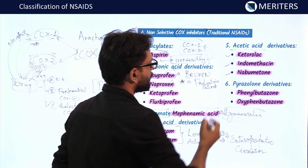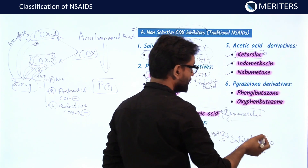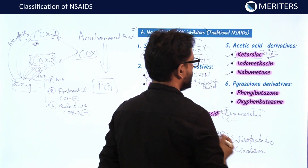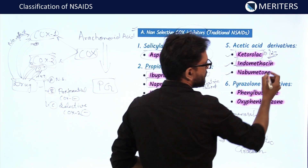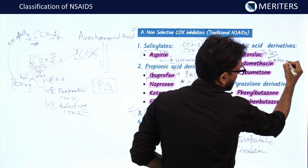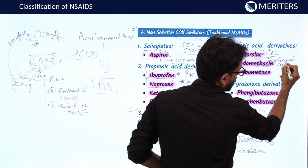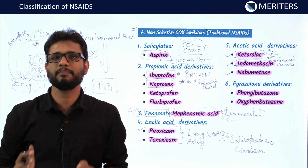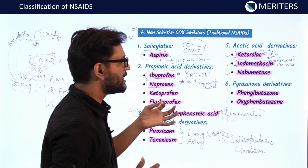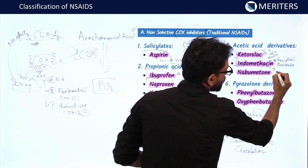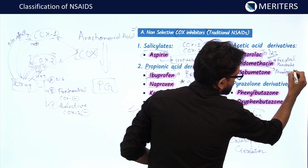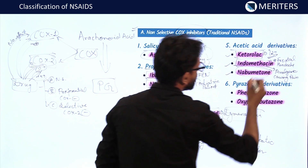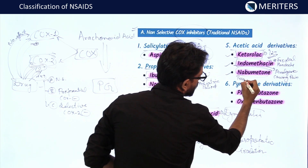Ketorolac, sold as Ketorol DT, is the NSAID which can be given IV. Indomethacin is notable because it causes frontal headache as a side effect — it is also called the analgesic causing pain, meaning this painkiller causes pain. Nabumetone is a prodrug — that is an important point to remember about nabumetone.